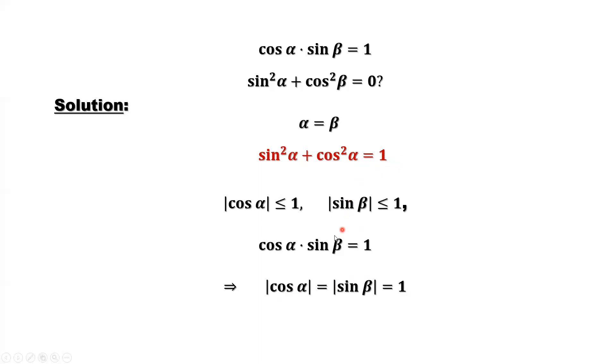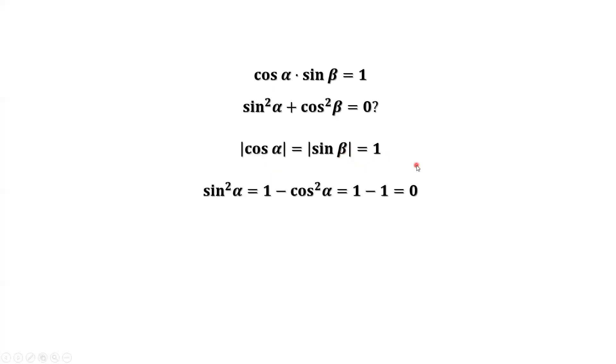Similarly, you can use this important identity for sine of beta. Sine of beta equals one. Sine of beta equals one, so cosine of beta equals zero.